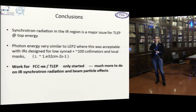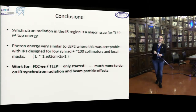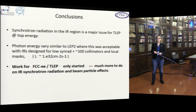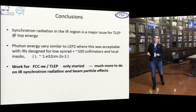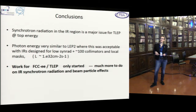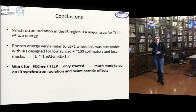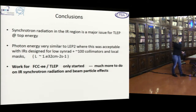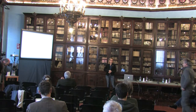In conclusion: synchrotron radiation in the interaction region is a major issue for FCC-ee. The photon energy is very similar to LEP2, where this was acceptable with interaction regions designed for low synchrotron radiation — there were about 100 collimators, but the luminosity was much lower so we did not have the high power we expect now. The work for FCC-ee has only just started; there is much more to do, not only on interaction region synchrotron radiation but also on beam particle effects.